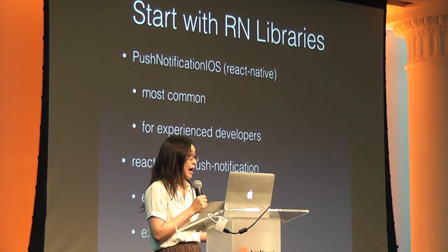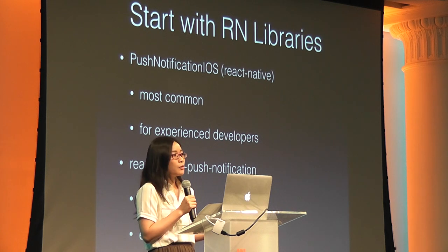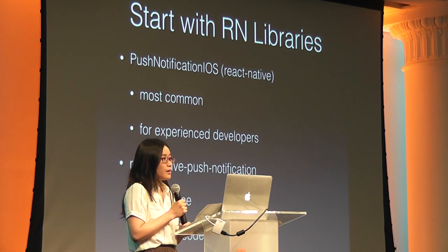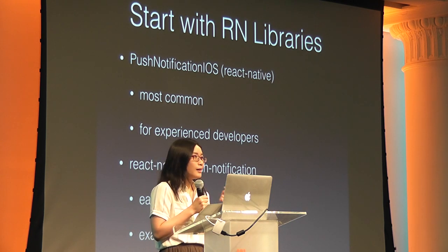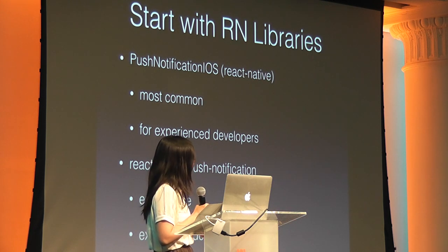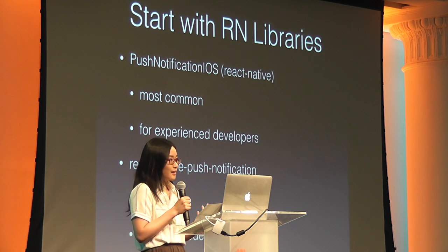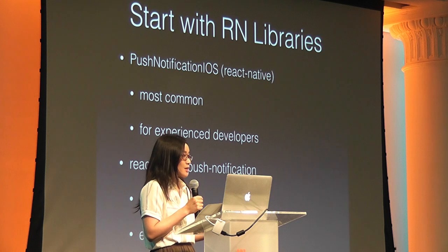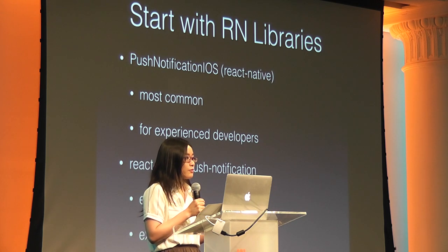As beginners, we started looking at what React Native libraries we could use. First, of course, comes to mind push-notification-ios, which is provided by React Native and written by Facebook — everyone's first step. The problem is, although the setup is very clearly described on their web page — you link some native libraries, add some code in the app, and implement the rest of the handlers in React Native — we were new to notifications and React Native, so we didn't know what's next. I would say this library is for experienced developers who want the most flexibility and want to write most of the handlers themselves.